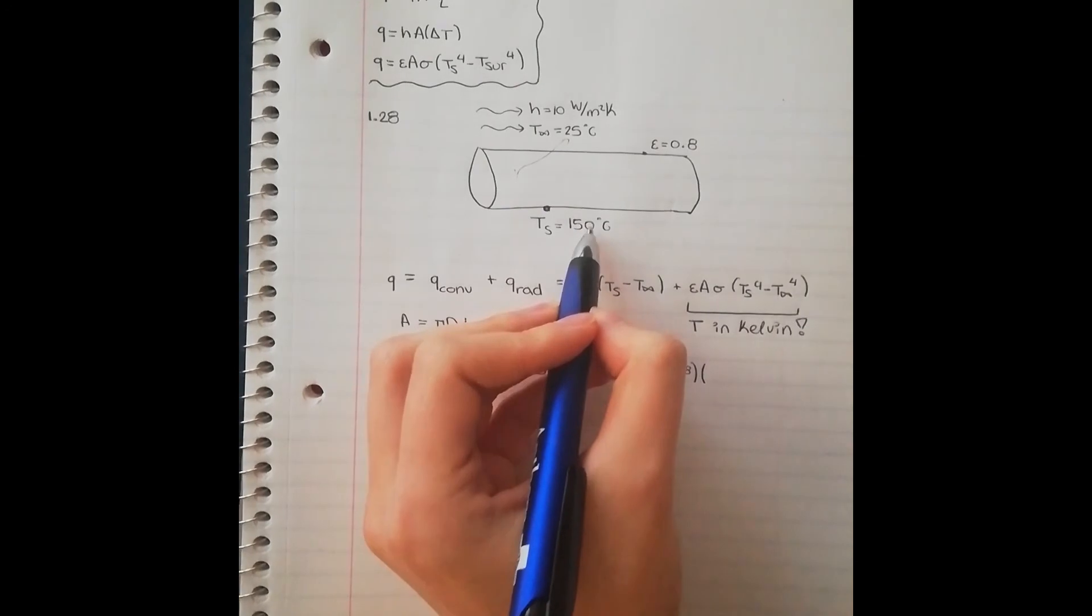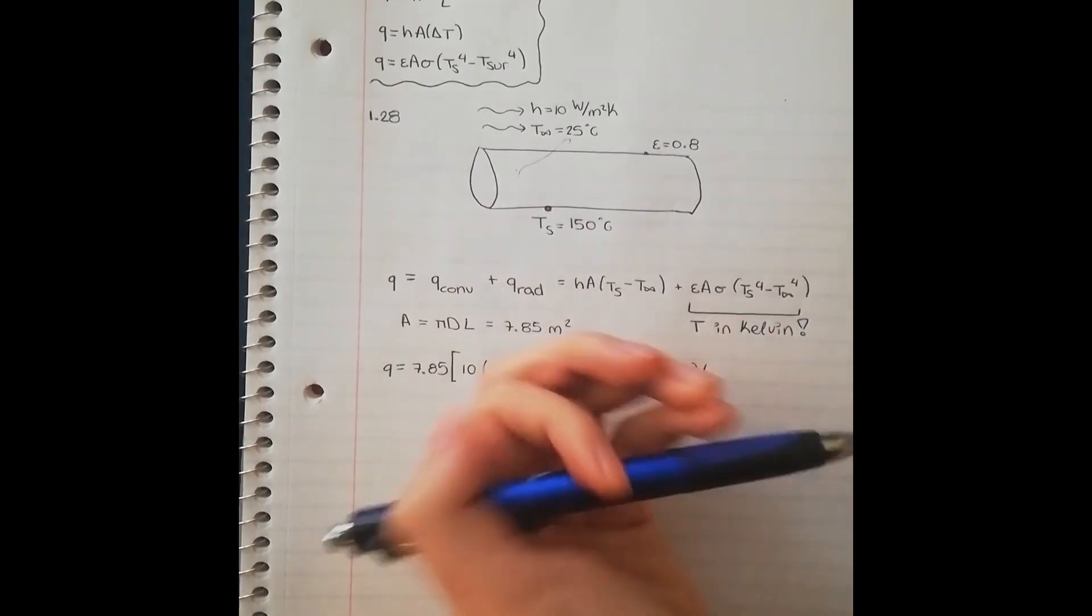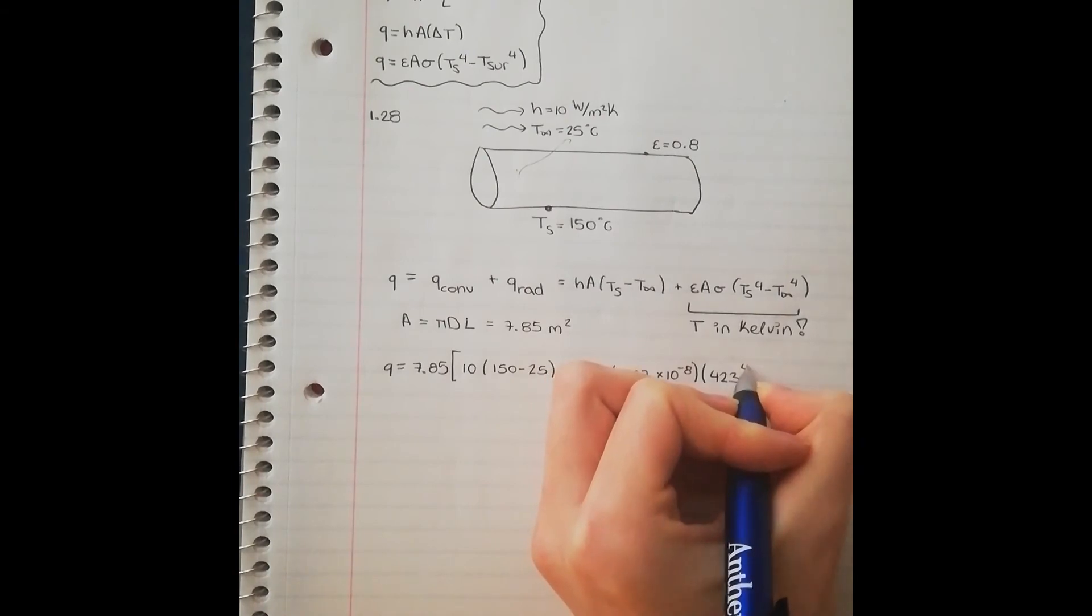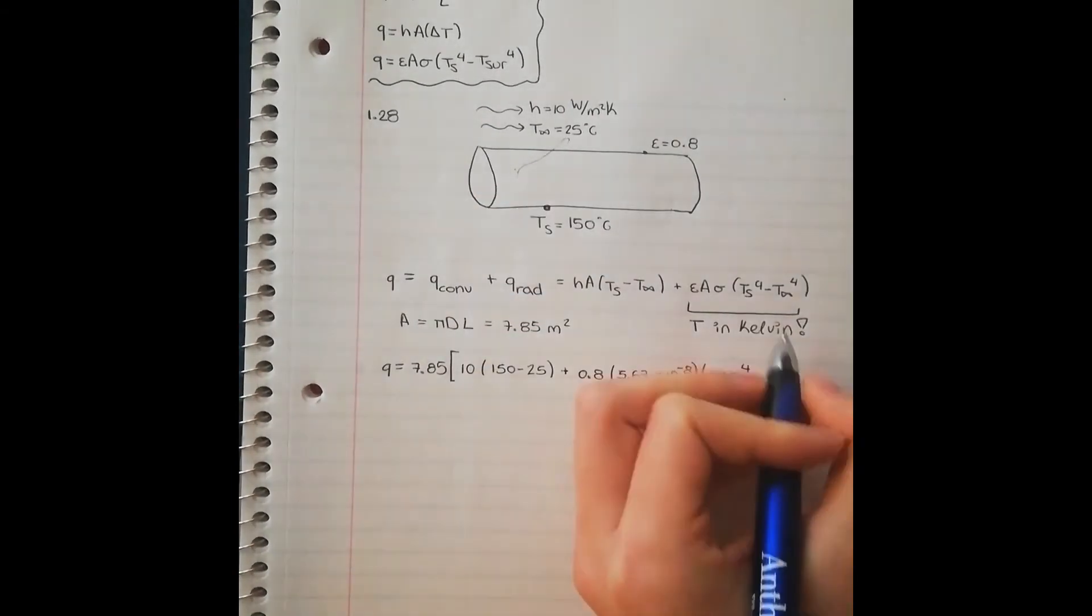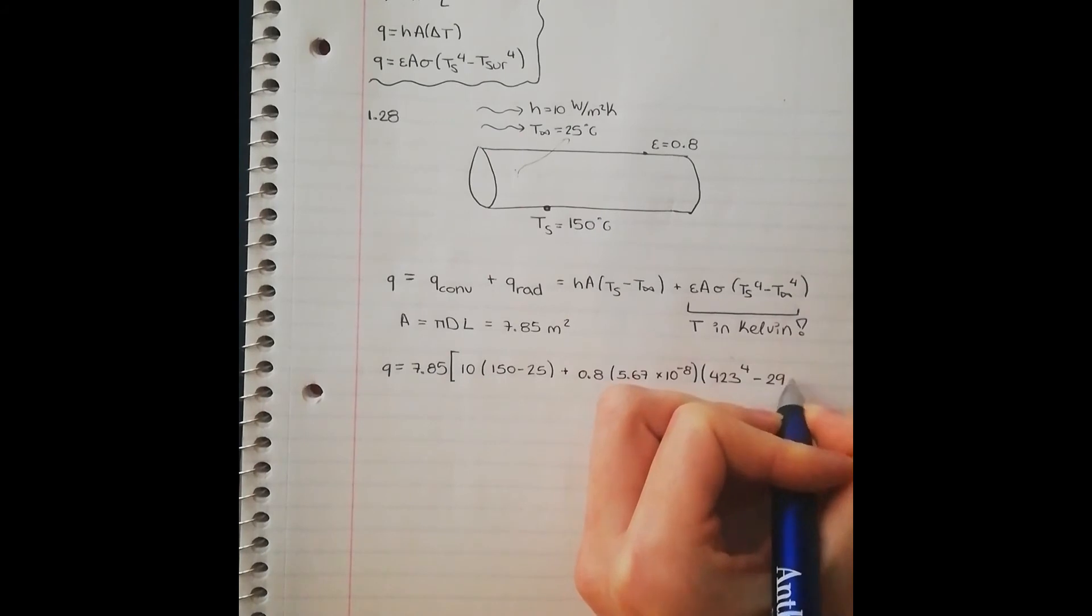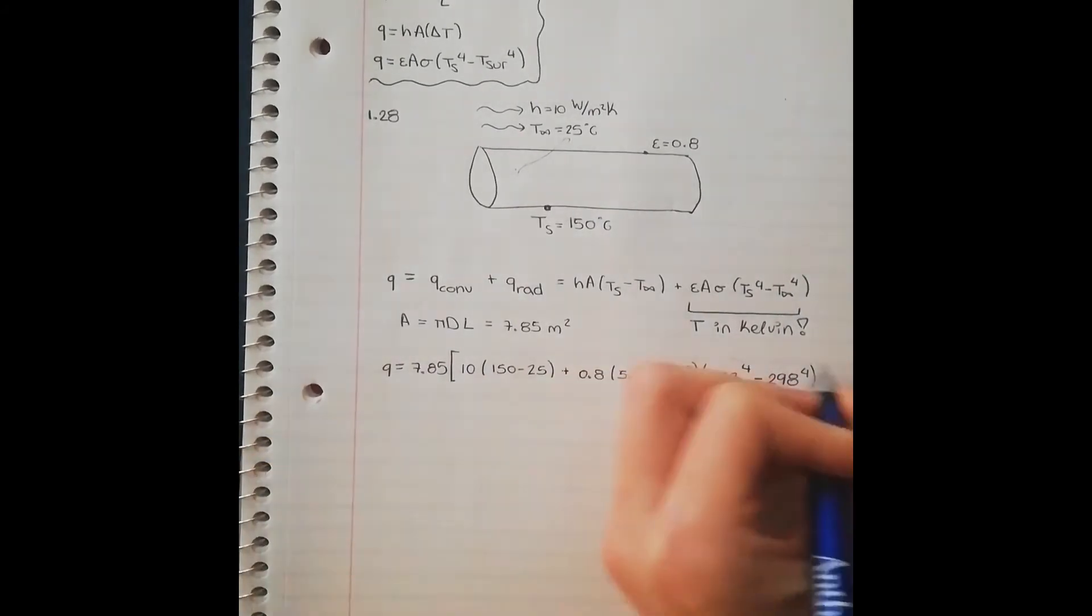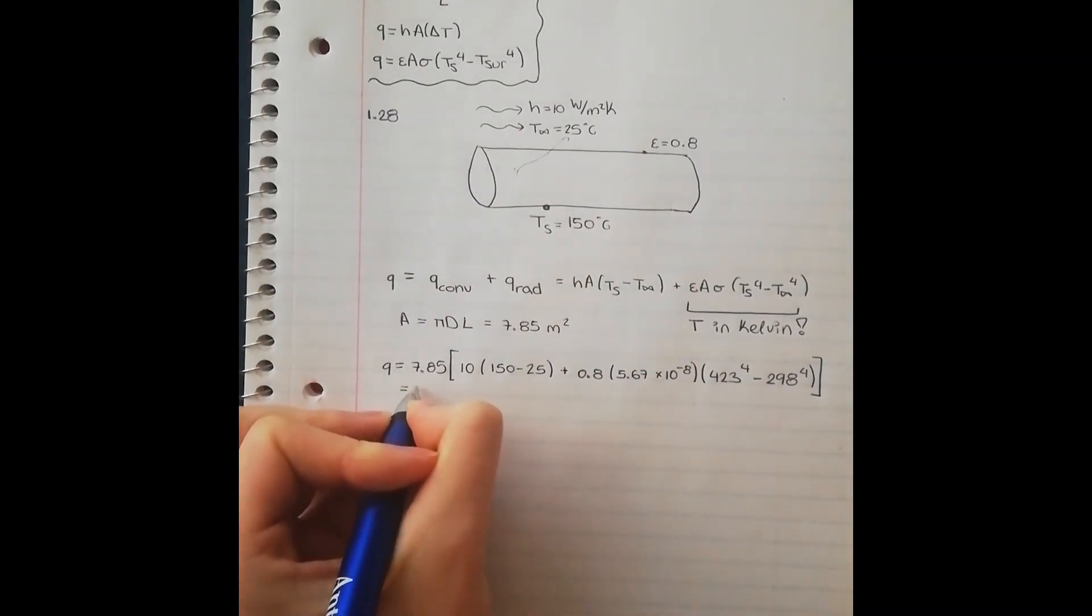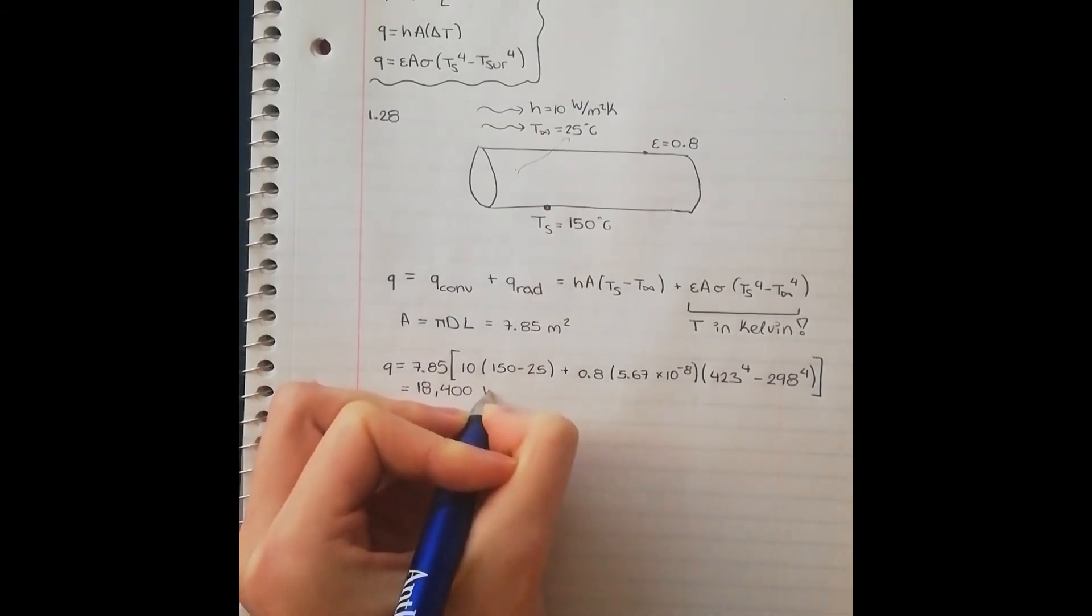So finding 150 in Kelvin, that's going to be 423 to the power of 4 minus 25 is 298 to the power of 4. And so solving this entire equation, you are going to get roughly 18,400 watts.